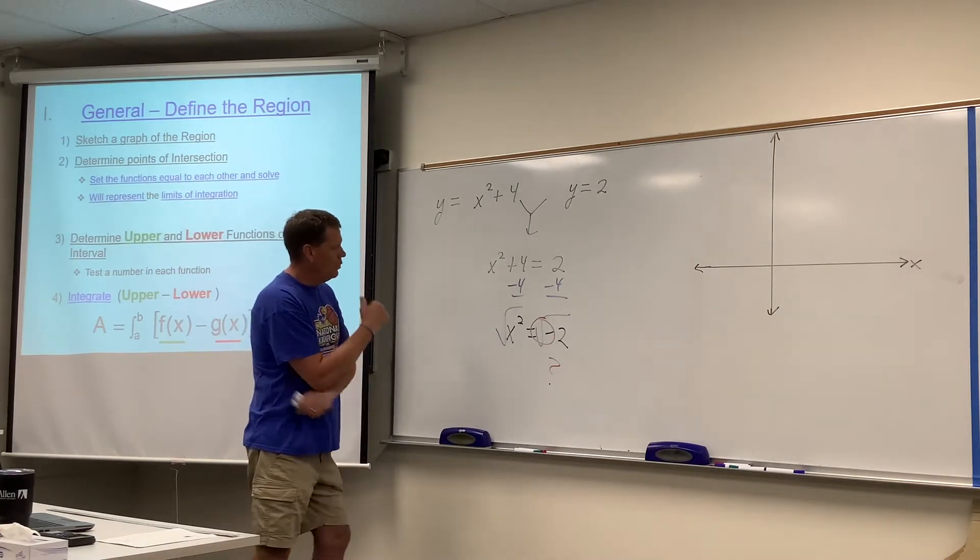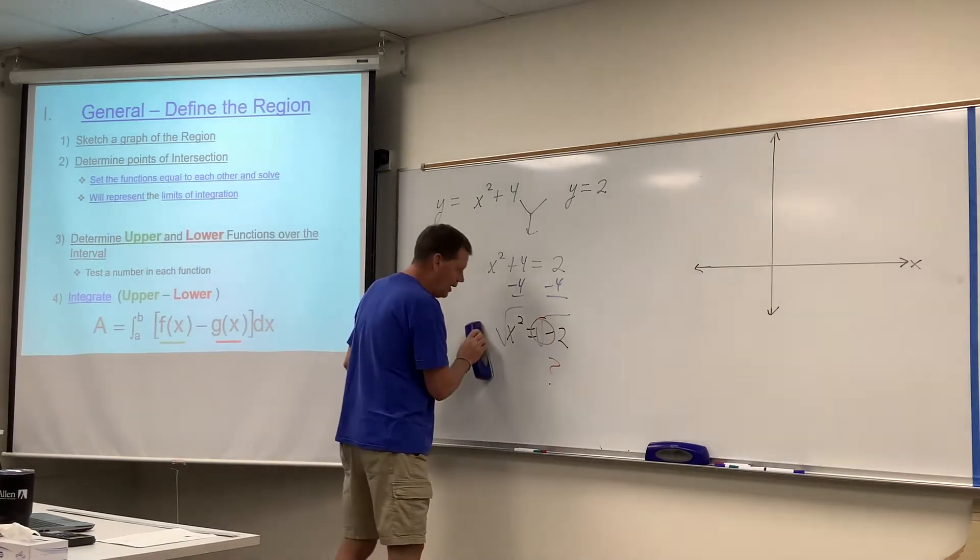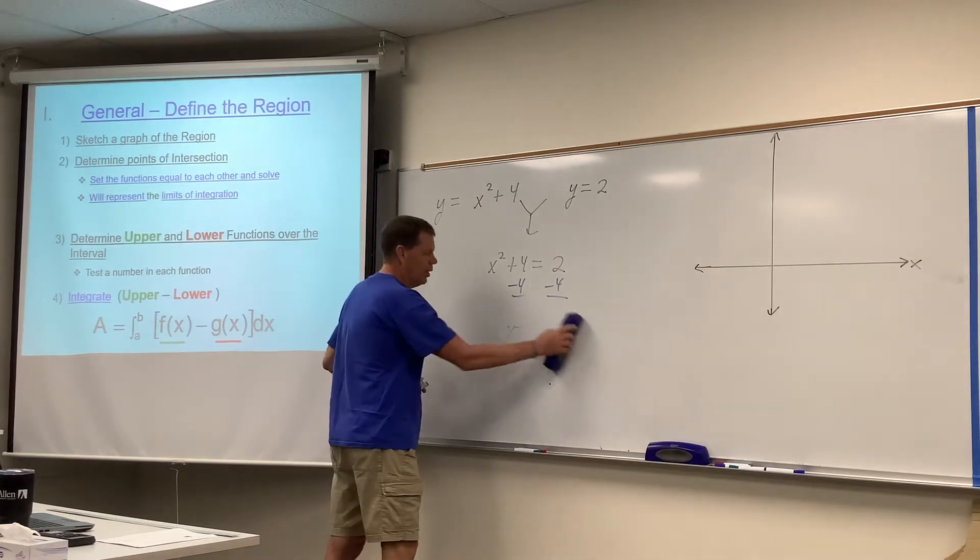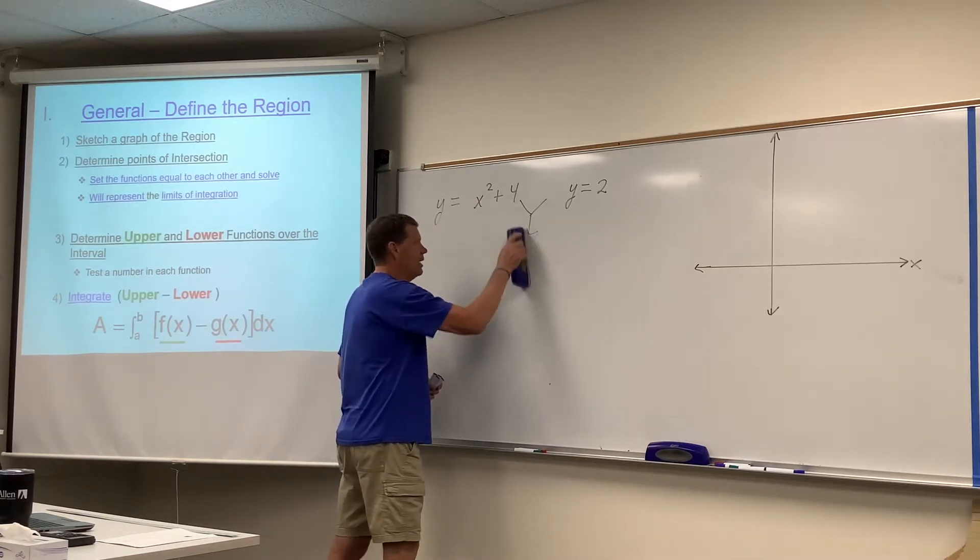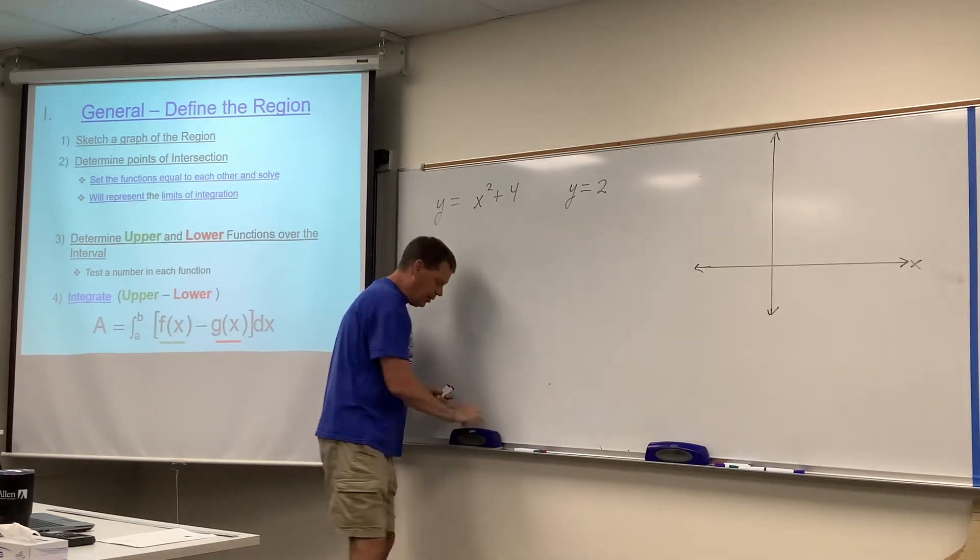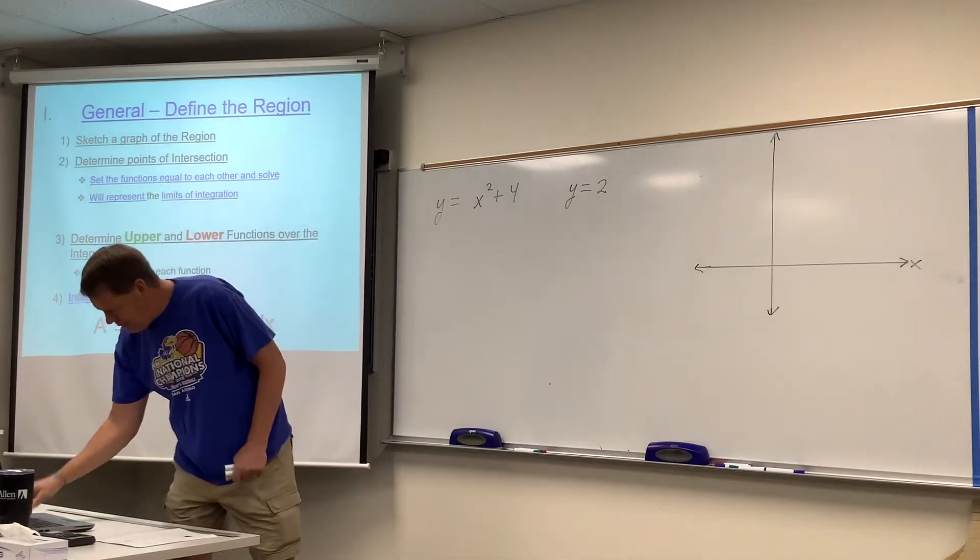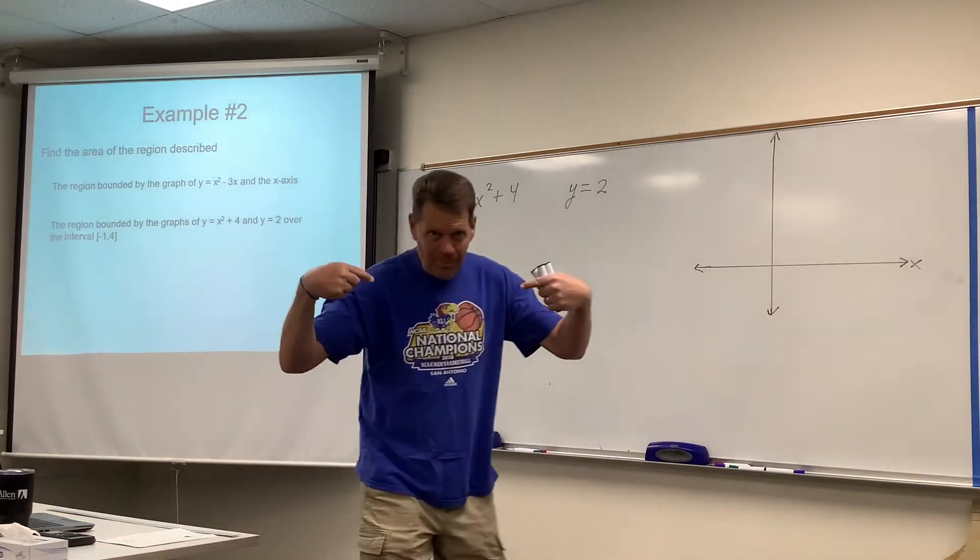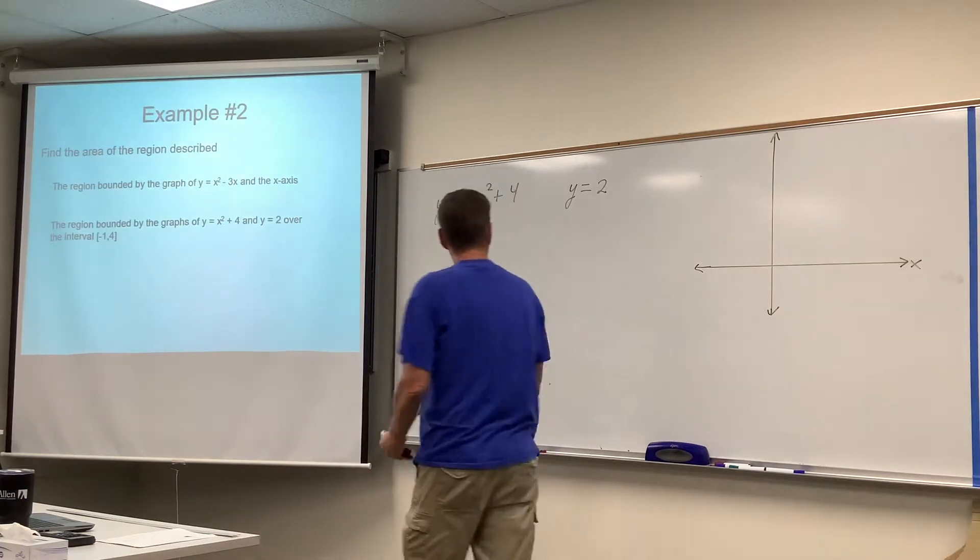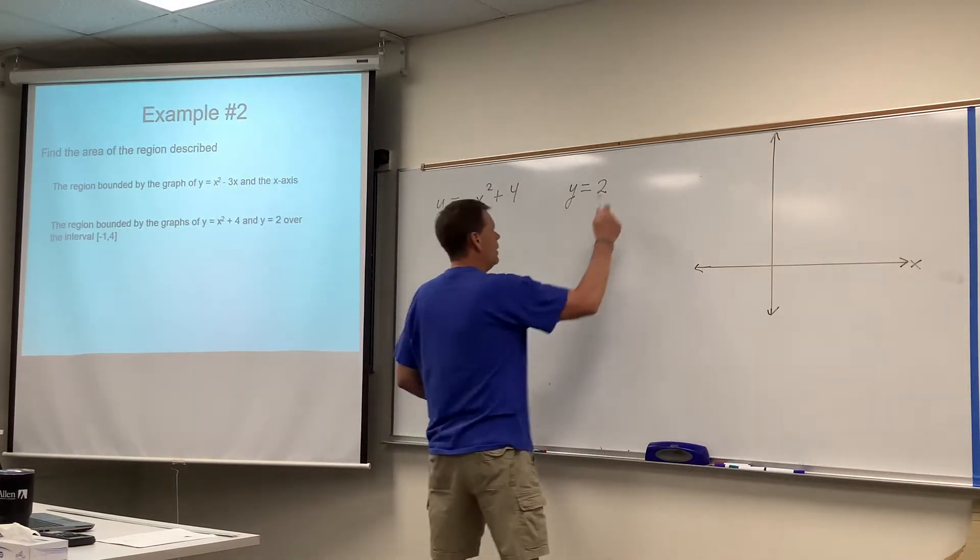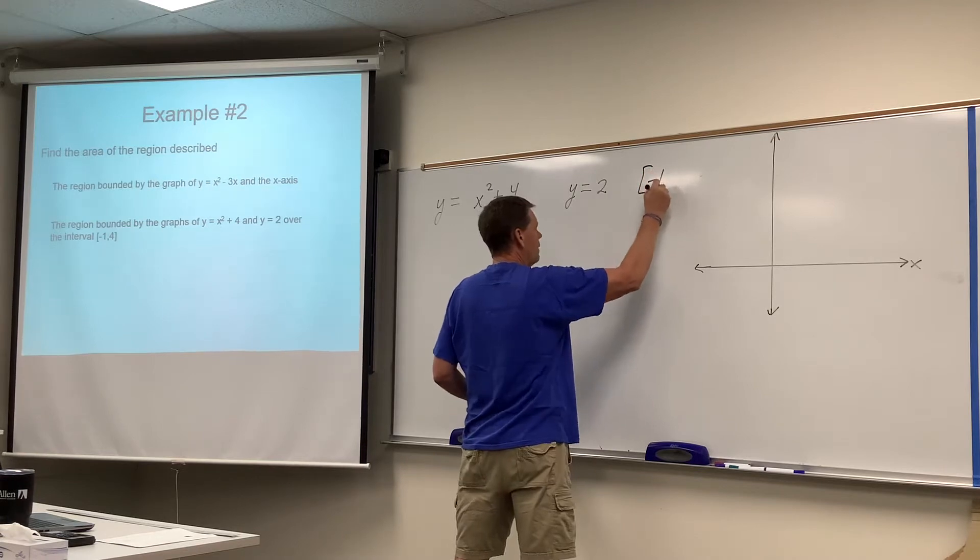So what do we do? Well, that's where the interval part comes into play. They don't cross each other. It's an unbounded region. That's why whoever made up this question, you're looking at him, said, oh, by the way, we want to look at the interval from negative one to four.